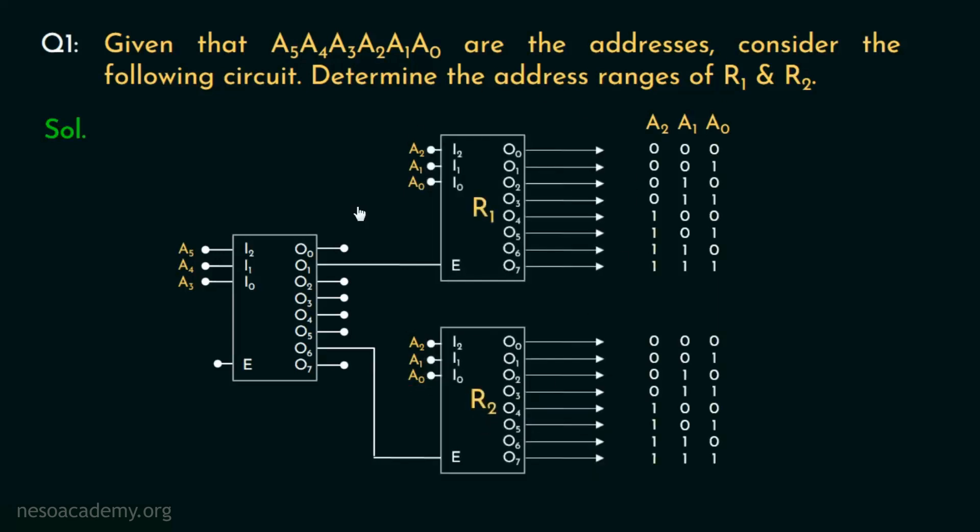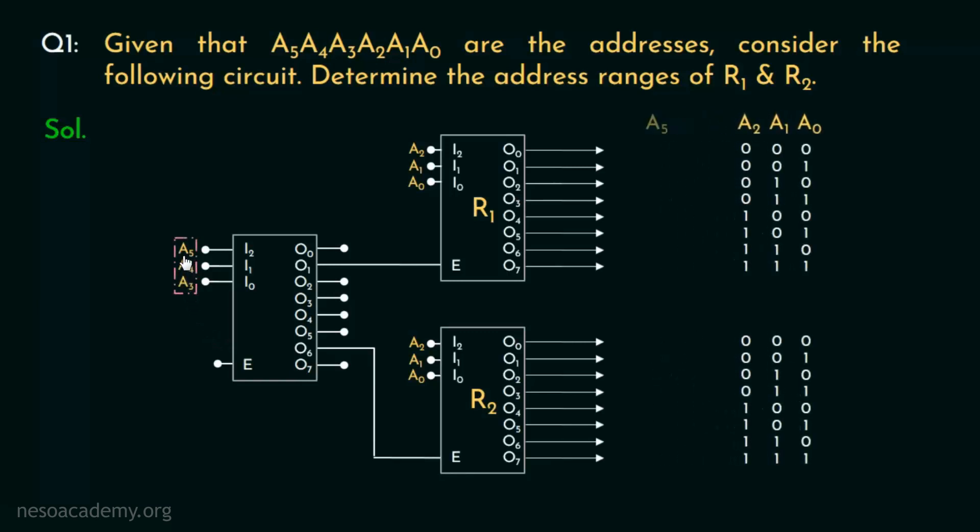Now these two ROMs are being controlled by this decoder. In order to enable R1, the output O1 needs to be activated. For R2, we should activate the output line O6. Notice the most significant 3 bits, A5, A4 and A3, are given to this decoder because these are responsible for enabling these two. Activating O1 will enable R1. Hence, the sequence for A5, A4, A3 will be 001, that is 1.